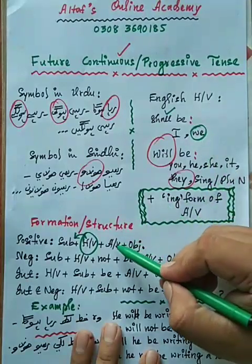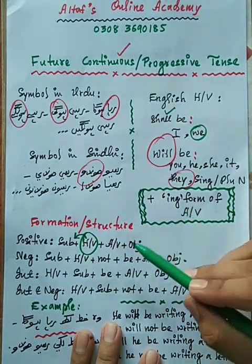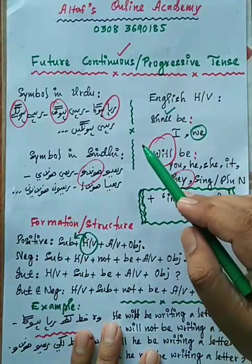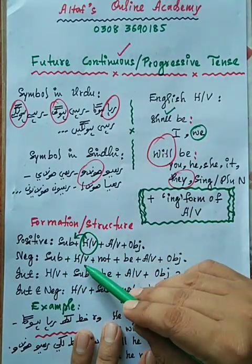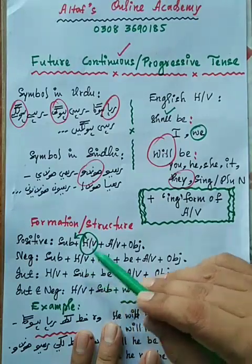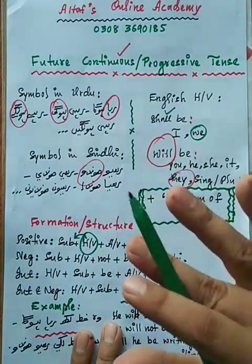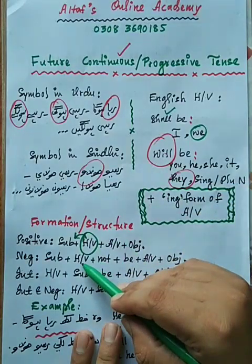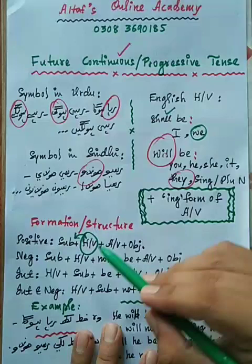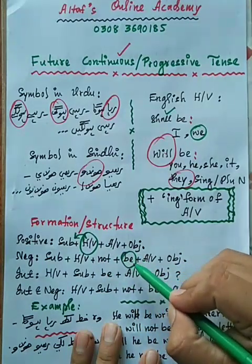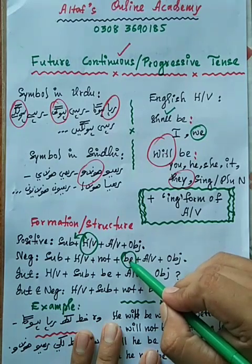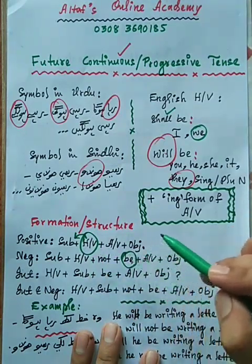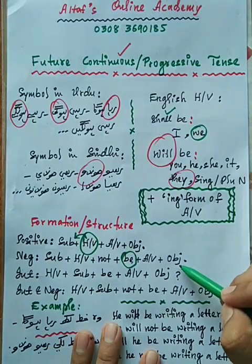After the helping verb comes the action verb in -ing form, then the object. That completes the positive sentence. For a negative sentence in future continuous, first place the subject, then the helping verb. Since the helping verb has two words, we place only the first word — shall or will — then 'not', then 'be', then the action verb in -ing form, and finally the object followed by a full stop.